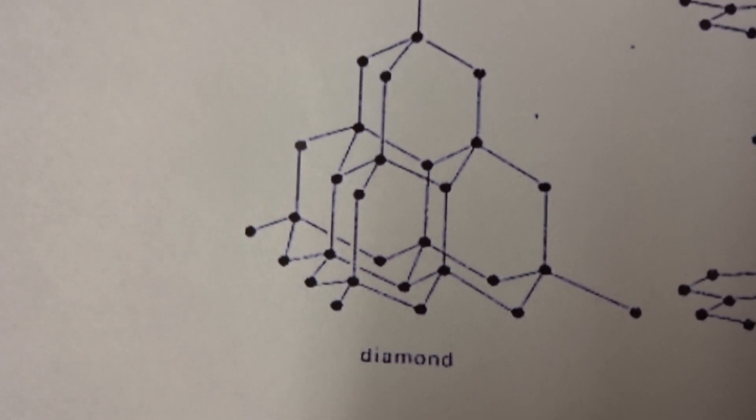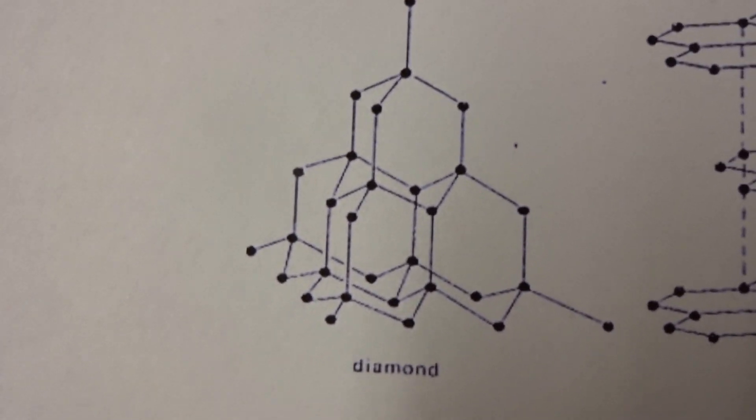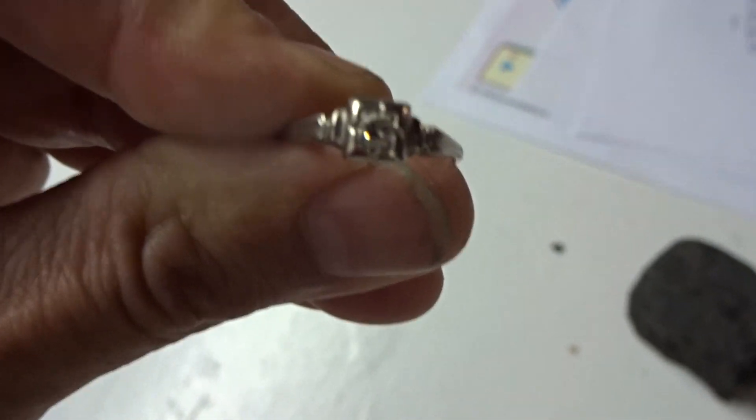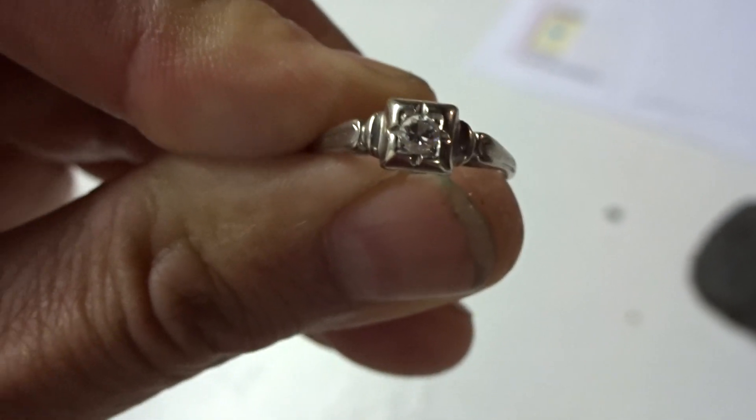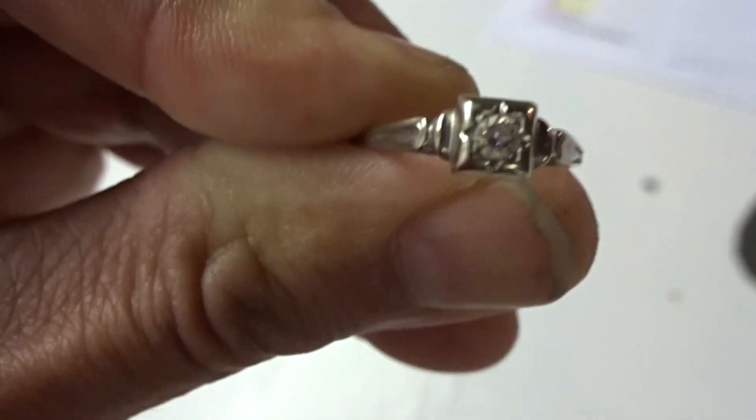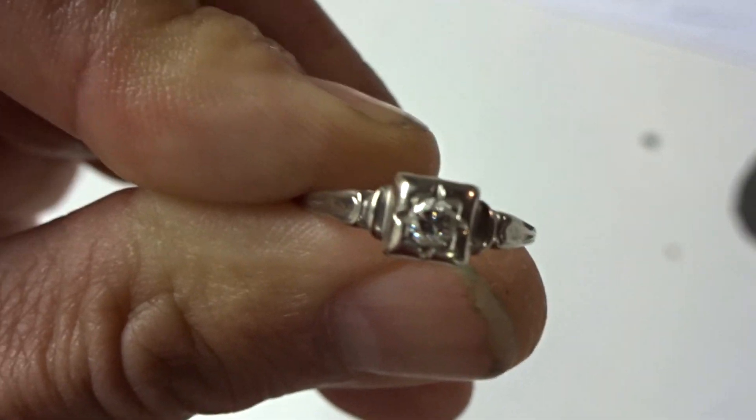Diamond on the Mohs hardness scale is the hardest of all minerals — its hardness is rated as ten. Even though polymorphs may contain the same empirical formula — empirical meaning a formula that shows what elements are in the molecule — they actually have different chemical and physical properties, such as melting point. In fact, this beautiful diamond, over many millions and millions of years, will revert back to carbon graphite.